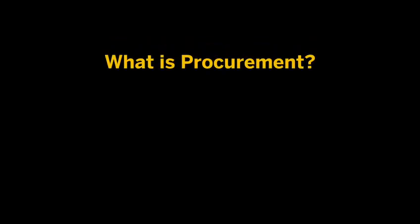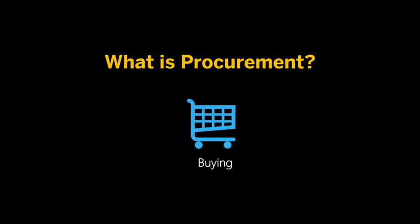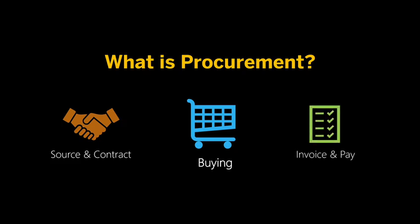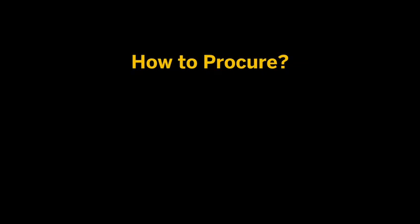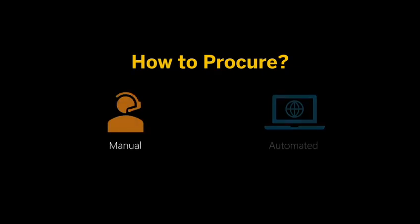Now what is procurement exactly? Procurement is sometimes confused with the process of purchasing. The procurement process does not only include the purchasing of goods and services, but it also includes the sourcing and acquiring of goods and services to fulfill business needs. Procurement processes can be executed either manually or automated through a platform.